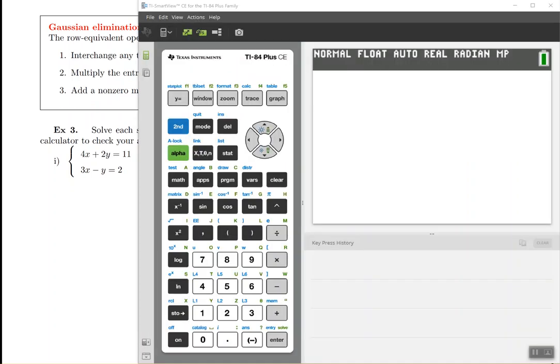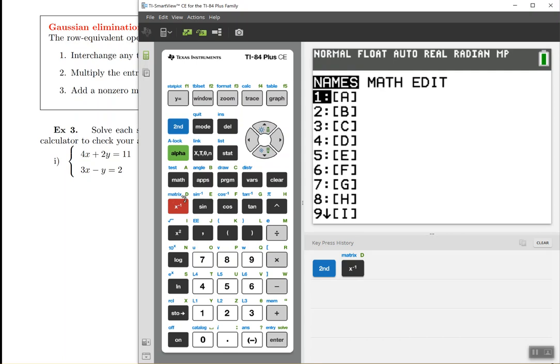So turn on your calculator, and once you turn it on, you're going to need to find the matrix key. Different calculators have that key in different places. The TI-83s usually have it somewhere around here. They have a matrix button. The TI-84s, they don't have a dedicated button, so you have to go second, and then click the x to the power of negative 1. That gets you into this menu called the matrix menu.